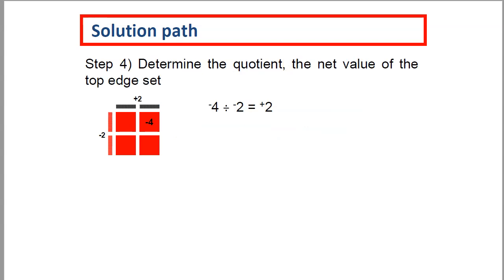Now we determine the quotient, the net value of the top edge set. Since that's two black edge pieces, that net value is positive 2.